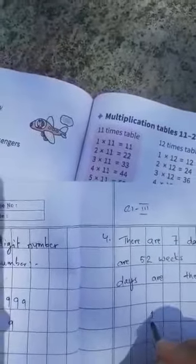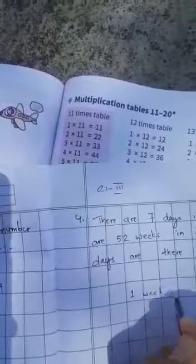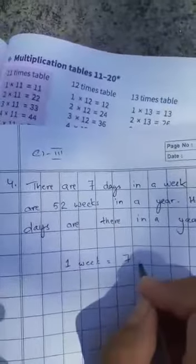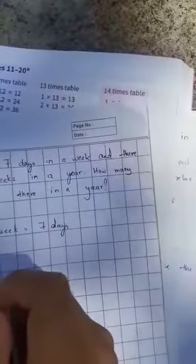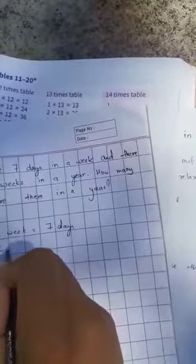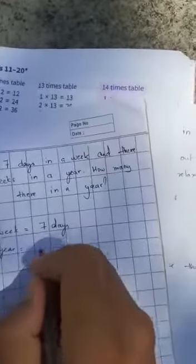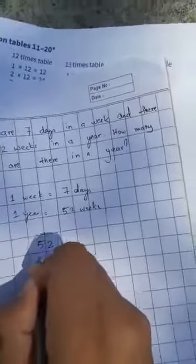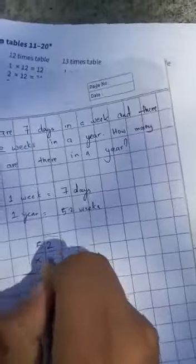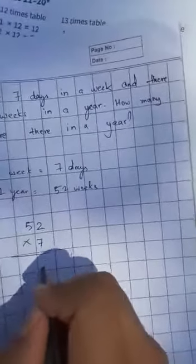One week equals seven days. One year equals 52 weeks. Therefore, how many days are there in a year? That means you need to do 52 times 7. 52 weeks times 7 days. 7 twos are 14.